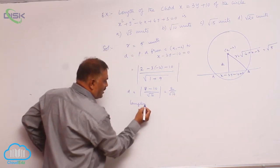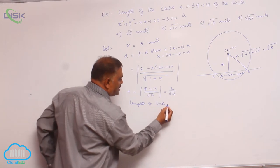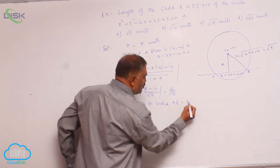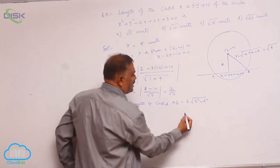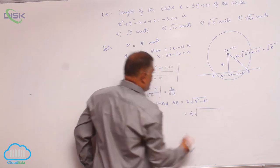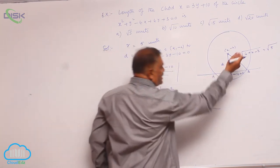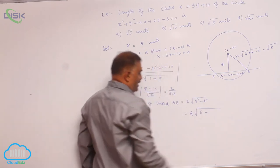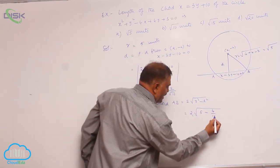We know the formula: length of chord AB is equal to 2 root of r squared minus d squared. That's 2 into square root of r squared, radius is 5, minus d squared 4 by 10.